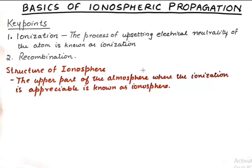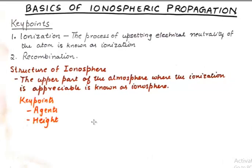The ionosphere is the upper part of the atmosphere where ionization is appreciable — that part of the atmosphere where ionization is happening all the time. The amount of ionization may differ, but throughout the ionosphere ionization needs to happen. Now there are two key points here: one is agents and the other one is height.